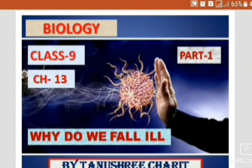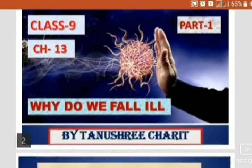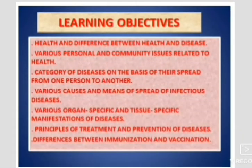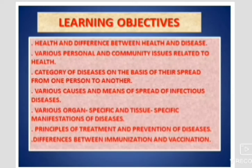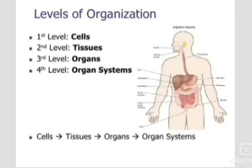Namashiva students, we are going to start a new chapter — Chapter 13: Why Do We Fall Ill. In this chapter we are going to read about health and the difference between health and disease, various personal and community issues related to health, categories of diseases based on their spread, various causes and means of spread of infectious diseases, organ-specific and tissue-specific manifestations of diseases, and principles of treatment and prevention of diseases, including differences between immunization and vaccination.